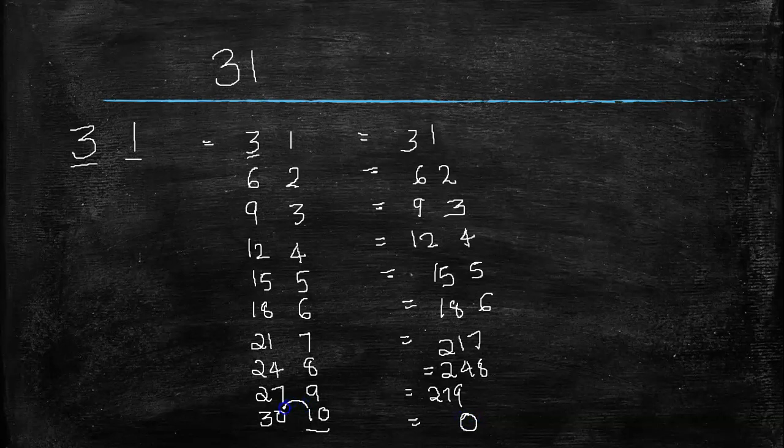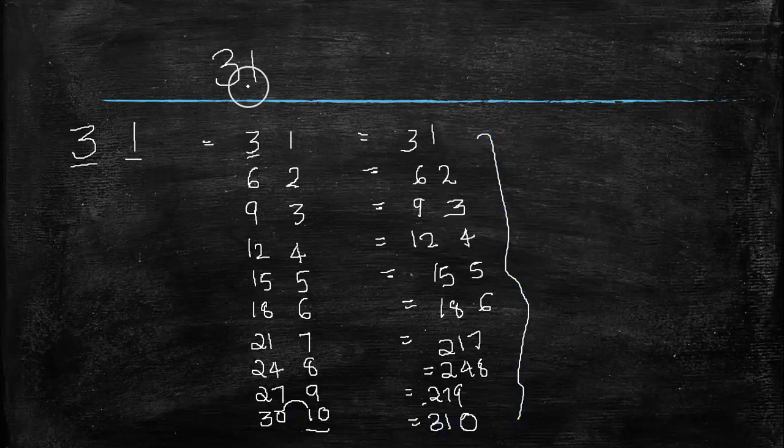That is 30 plus 1 is 31. So this is the table of 31. Now you may think that it's very simple to write the table of 31, right?